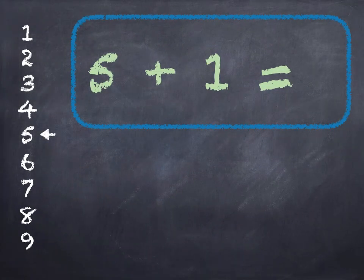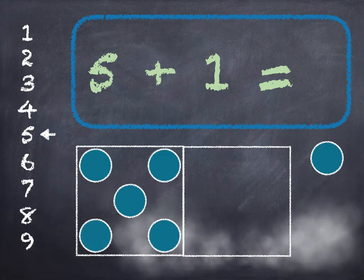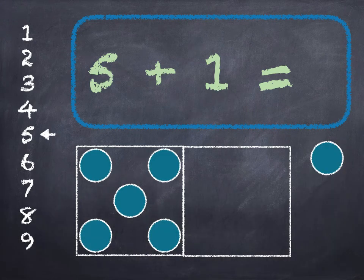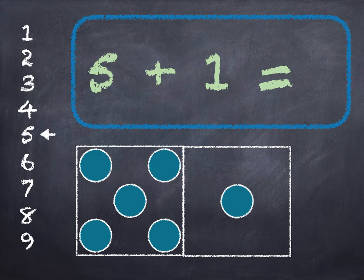5 plus 1. 5 in the box, add 1 on. 5, 6. Start at 5 on the number line and go down 1. 5 plus 1 is 6.